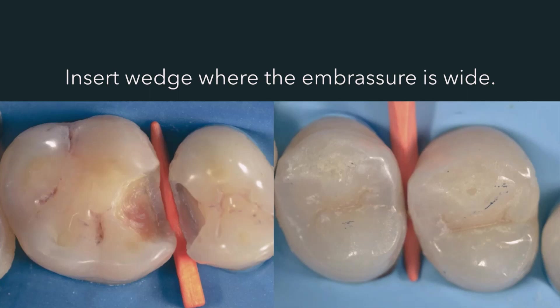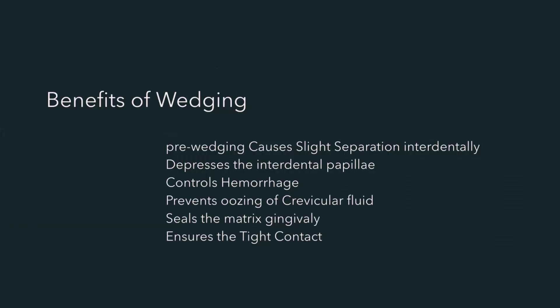Excessive wedging forces are unnecessary when an additional tooth separator such as a ring will be used. Insert the wedge where the embrasure is wide, from buccal to lingual or lingual to buccal. The benefits of pre-wedging include: slight interdental separation, depression of the interdental papillae, hemorrhage control, prevention of crevicular fluid oozing, gingival sealing of the matrix, and ensuring tight contacts.